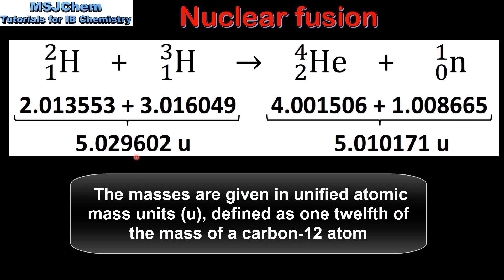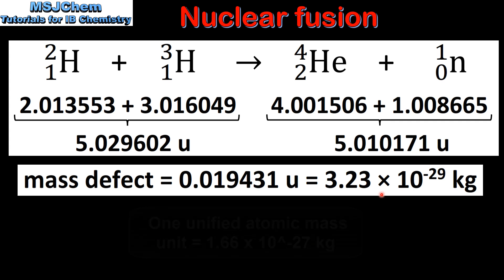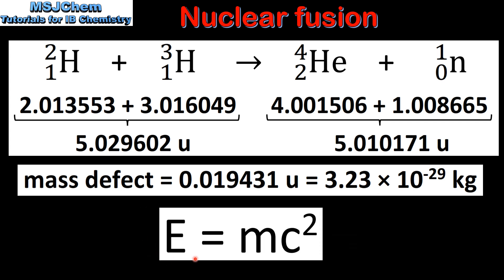By calculating the total mass of the reactants and the total mass of the products we can calculate the mass defect. When we subtract the mass of the products from the mass of the reactants we get our mass defect. This mass defect is given in unified atomic mass units which we can convert to kilograms.